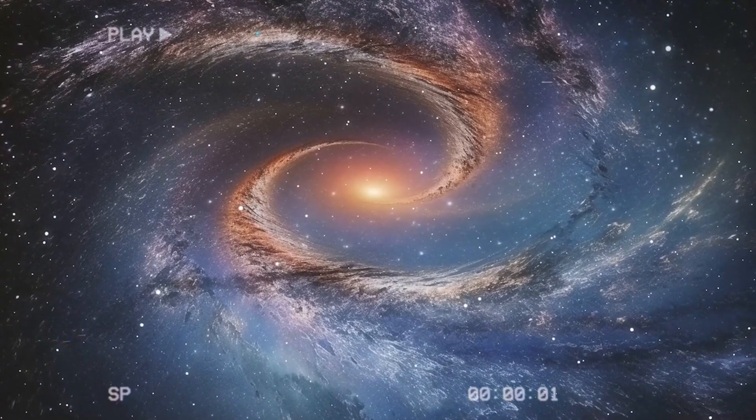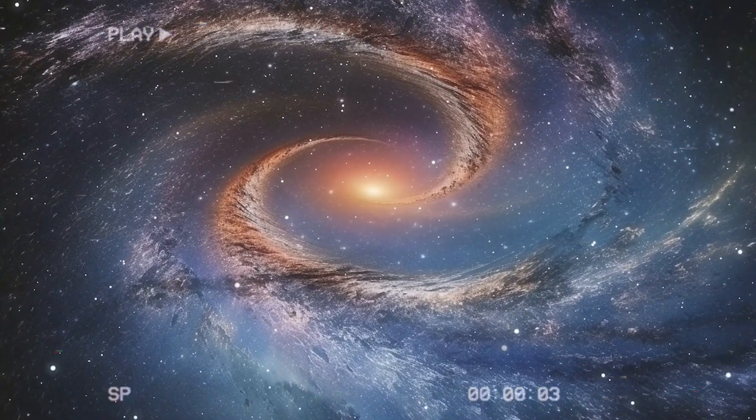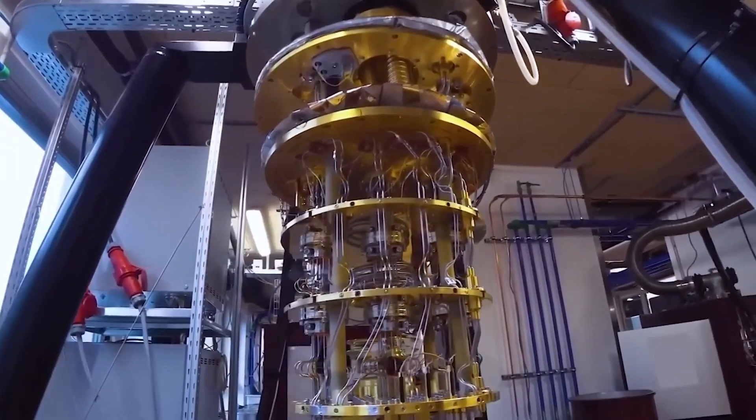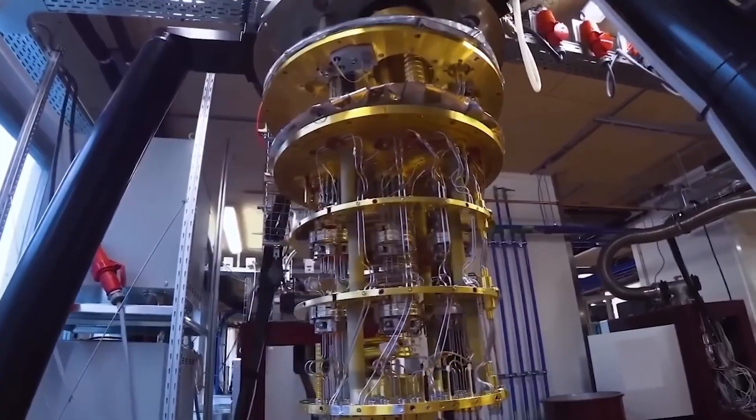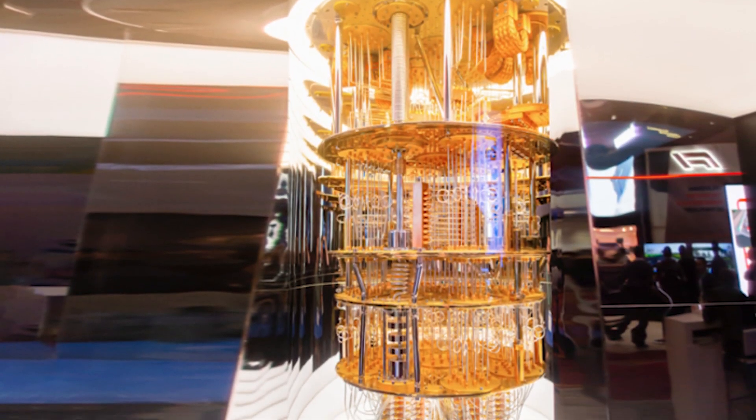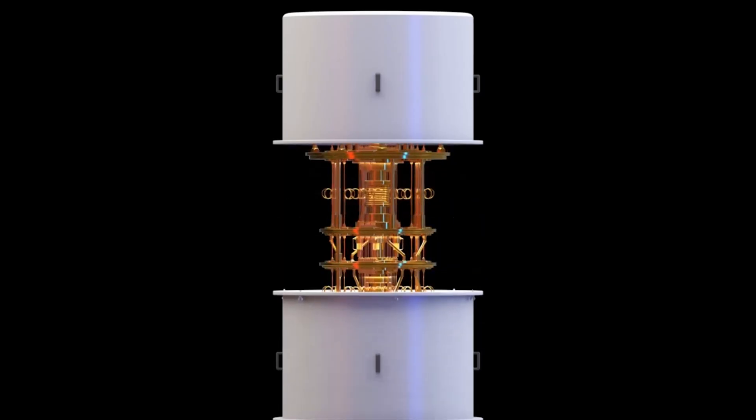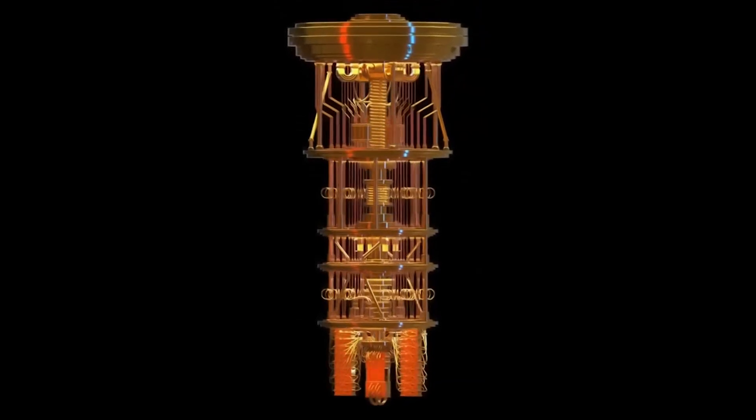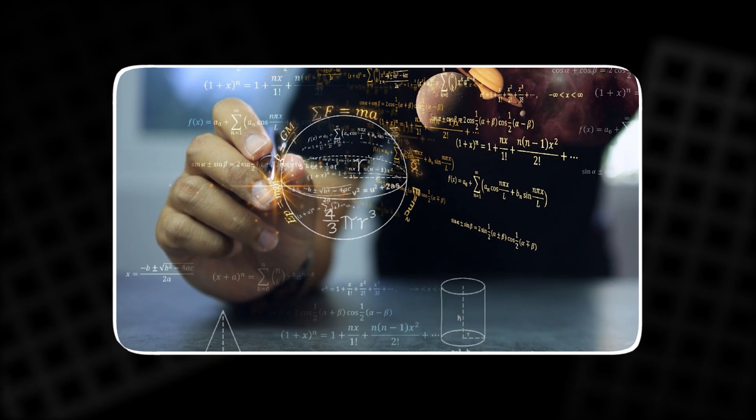Taken together, these discoveries create a picture of a universe that is not rigid but adaptable. It is flexible, it responds to observers, it shapes itself around interactions. It hosts states that overlap, combine, and separate depending on how they are touched. This view of reality looks very different from the old mechanical universe made of fixed parts. It resembles a field of possibilities, shifting and responding in ways that once sounded like imagination rather than physics.